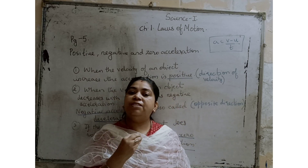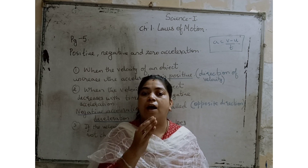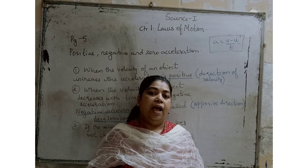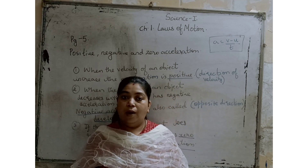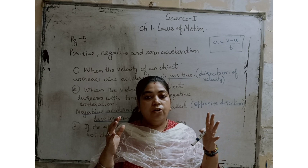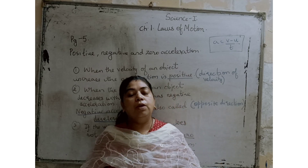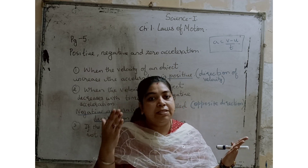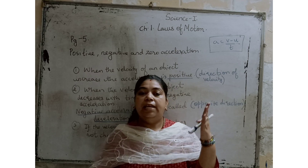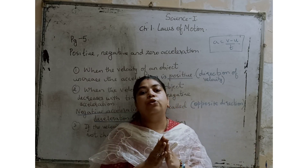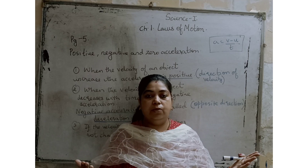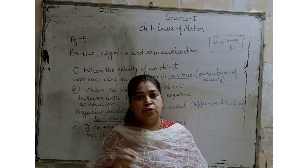We studied uniform and non-uniform motion using the activity of Amar, Akbar, and Anthony. We saw that Akbar had non-uniform motion, whereas Anthony and Amar both had uniform motion. When we analyzed their data, we found that equal distance covered with equal time intervals is called uniform motion, whereas unequal distance with equal time intervals is called non-uniform motion.